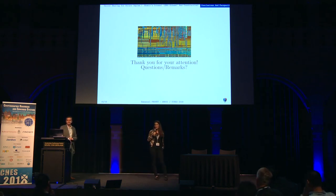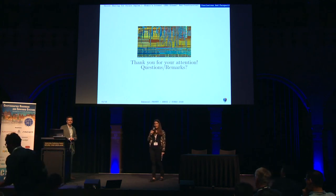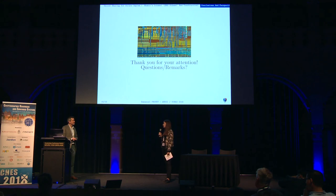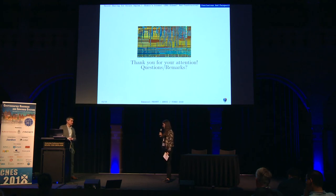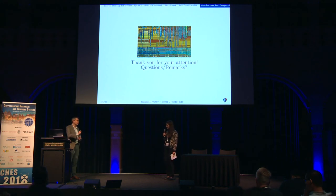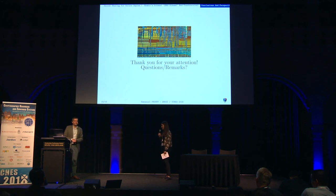We have time for one quick question. If you apply your method, you need fewer traces to recover the secret but you need to target more shares, so you need to target more points of interest on your trace. Do you think that is easier than having more traces? It depends on the quality of the observation. If you are quite confident on the synchronization, you can identify the place where the shares are being manipulated, and I think there are situations where it can be better. If you have a lot of synchronization issues, then maybe it's better to decrease the number of shares you have to observe. Thank you, let's thank the speaker.